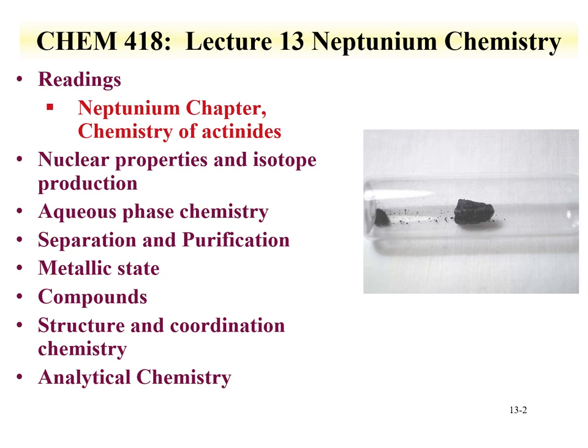We're going to talk about the aqueous phases of neptunium. Multiple oxidation states are present, but we'll see that the +5 oxidation state dominates. This +5 oxidation state is similar to the uranyl, in that you have a linear cation with two oxygens. We'll talk about the separation and purification of neptunium, and we'll see that the oxidation state plays a role. When discussing other separations done as part of the nuclear fuel cycle — for instance the Purex process — the fact that the oxidation state of neptunium can change has influences on these radiochemical separations.